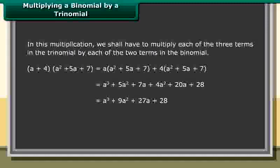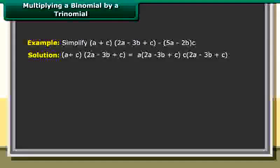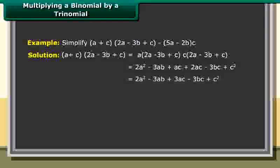Example: Simplify (A + C)(2A − 3B + C) − 5A − 2B × C. Solution: (A + C)(2A − 3B + C) equals A(2A − 3B + C) plus C(2A − 3B + C), which equals 2A² − 3AB + AC + 2AC − 3BC + C², which equals 2A² − 3AB + 3AC − 3BC + C². And 5A − 2B × C equals 5AC − 2BC.